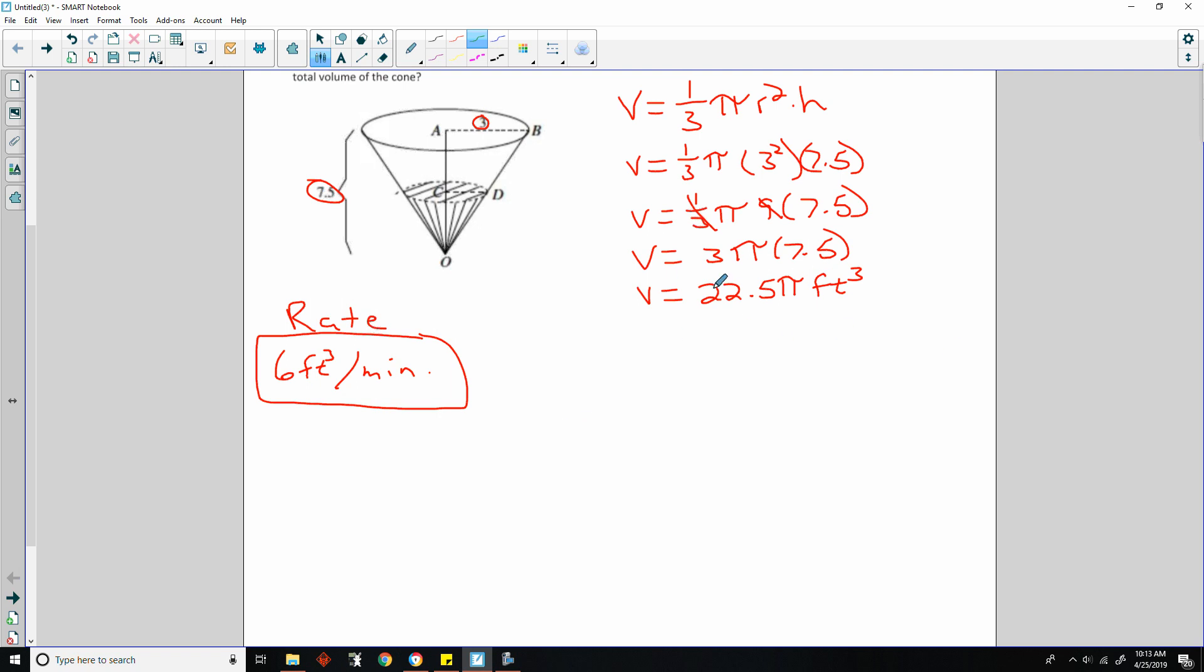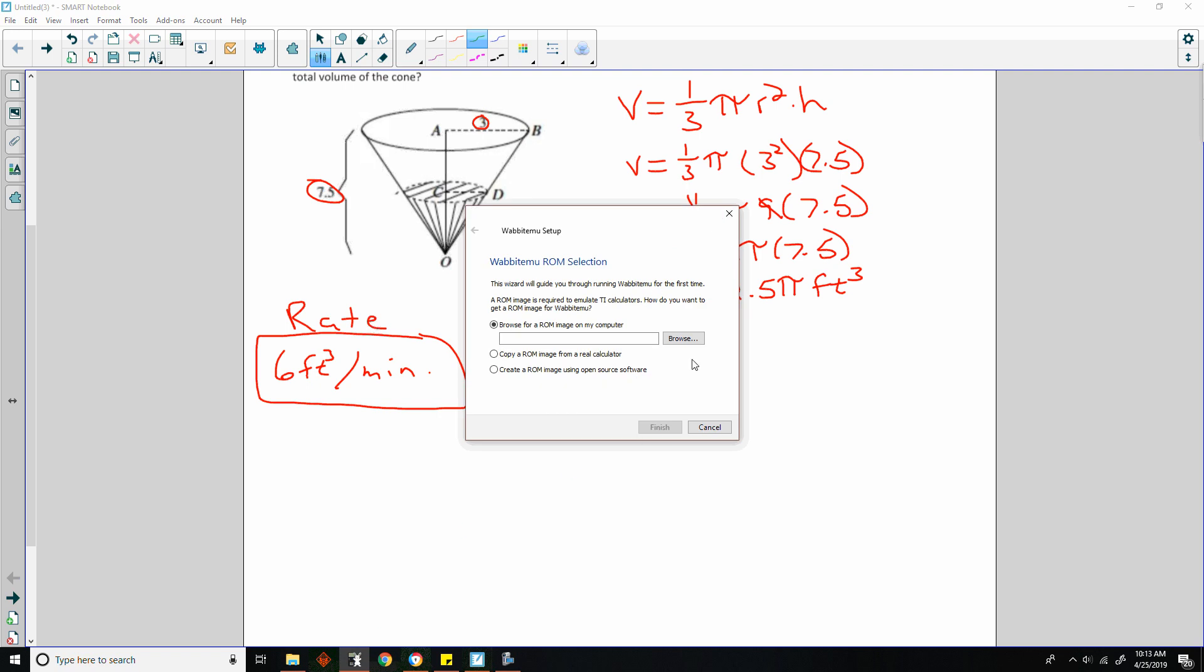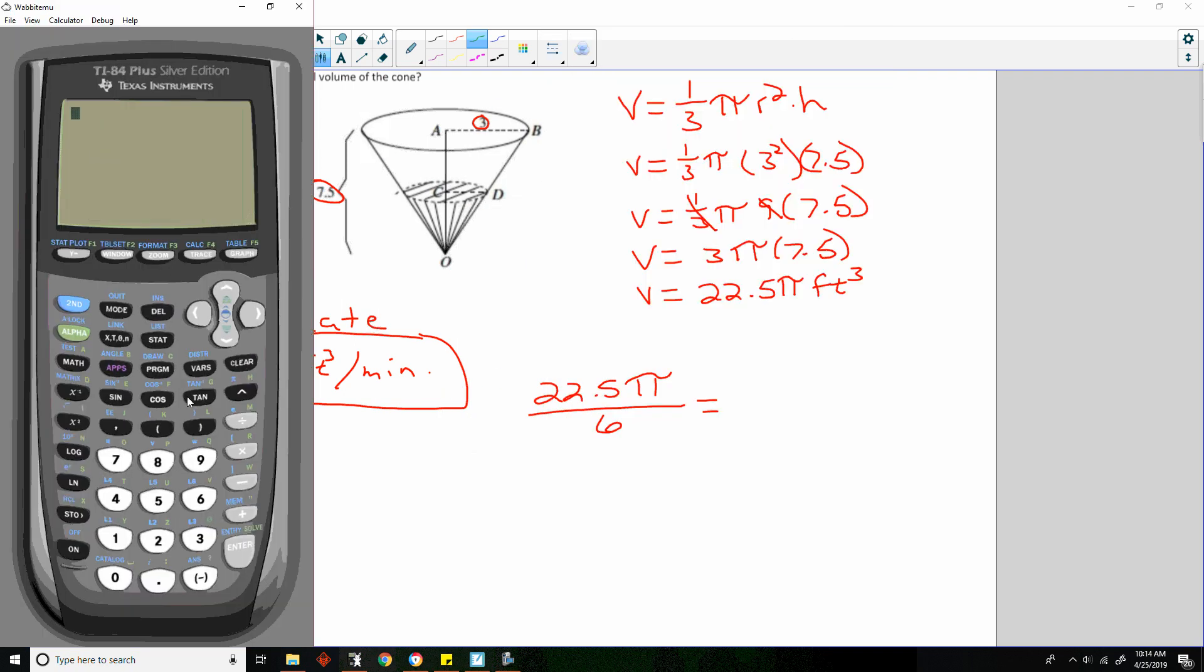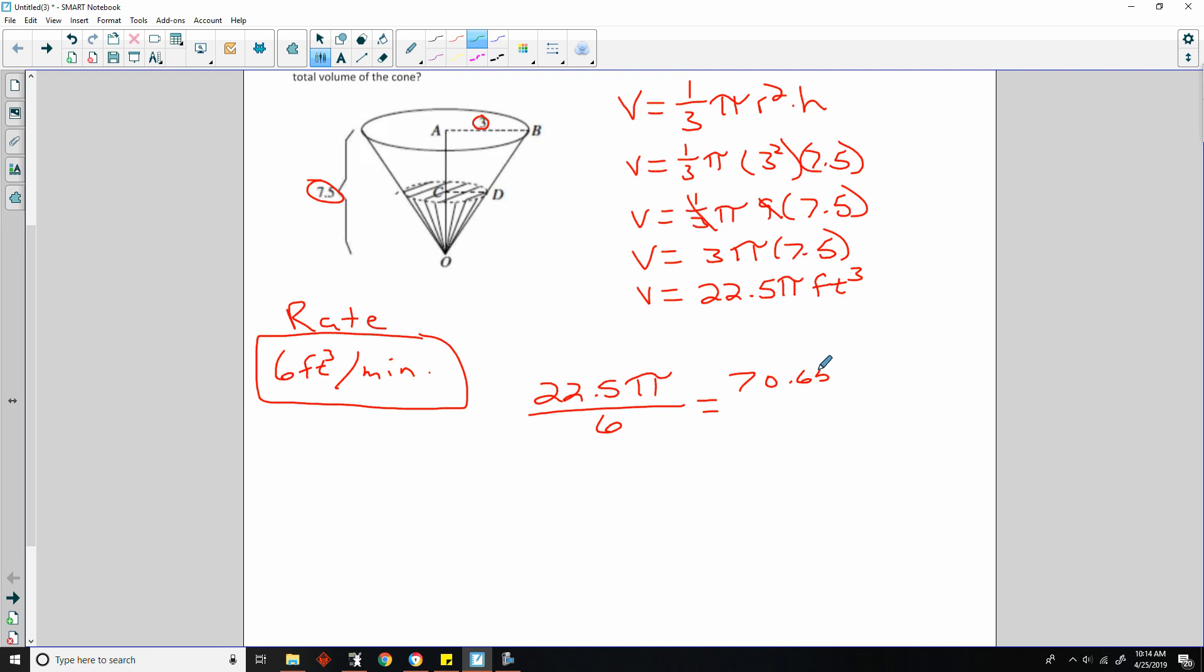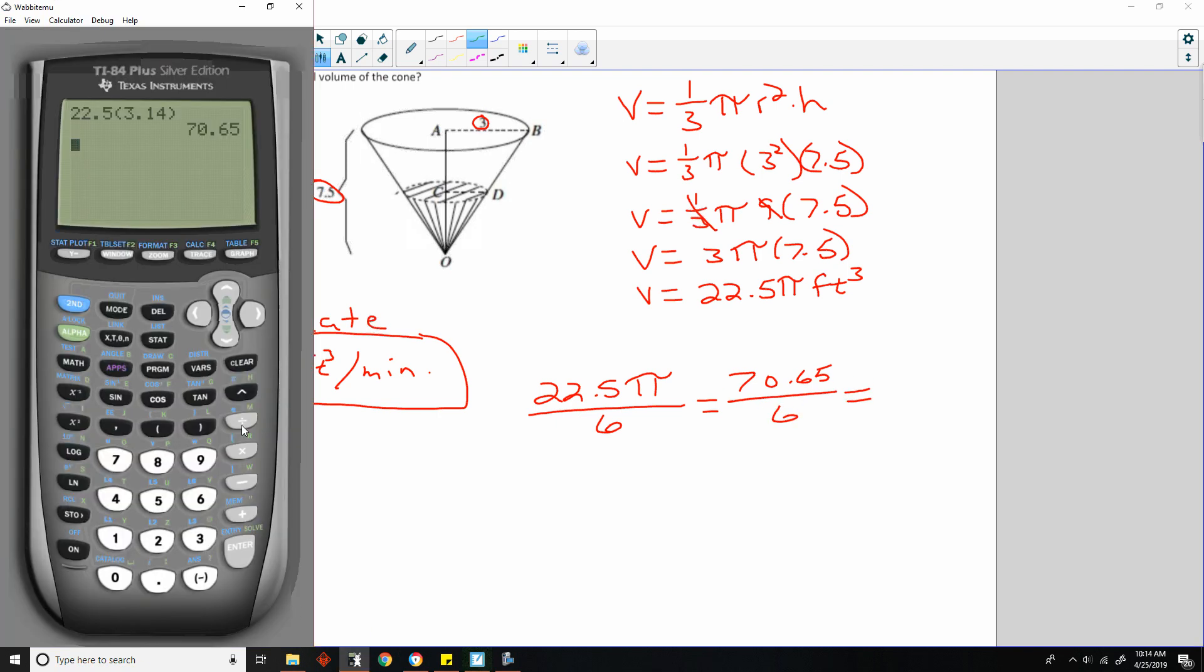Well, we take our answer here. So it would be 22.5 pi divided by the 6 cubic feet per minute, and that would be 22.5 pi. Let's just do it in our calculator. So we would do 22.5, and it said to use 3.14 as an approximation. So 22.5 times 3.14 is 70.65 divided by 6. And we get 11.775. Let's just round that to approximately 11.78.